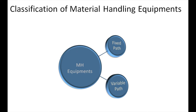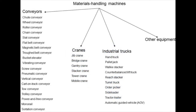A detailed classification of material handling equipment includes conveyors, cranes, industrial trucks, and other equipment such as hoists and elevators. Types of conveyors include: chute conveyor, wheel conveyor, roller conveyor, chain conveyor, slide conveyor, flat belt conveyor, magnetic belt conveyor, troughed belt conveyor, bucket elevators, vibrating conveyor, screw conveyor, pneumatic conveyor, vertical conveyor, carton track conveyor, tow conveyor, trolley conveyor, power-and-free conveyor, monorail, and sortation conveyor.